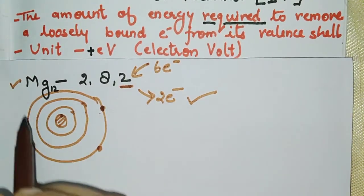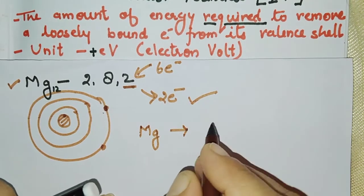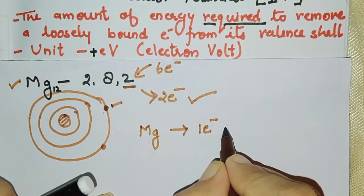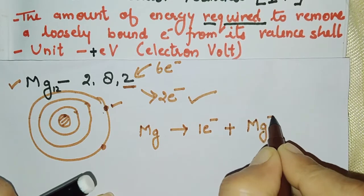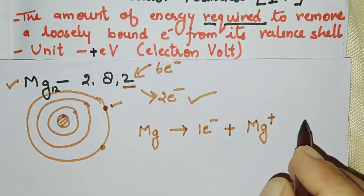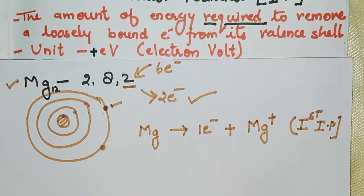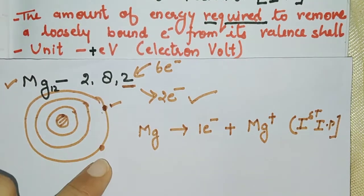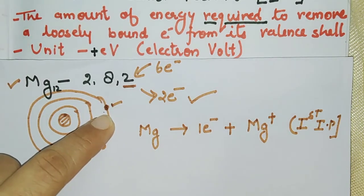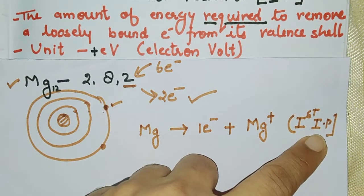So what will magnesium do? It will give one electron at a time. When magnesium gives 1 electron, it converts into Mg+. The energy absorbed during this process is called the first ionization potential.